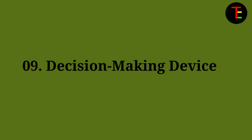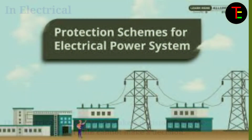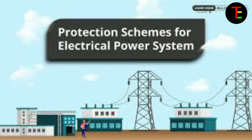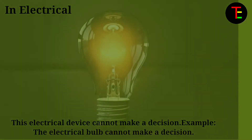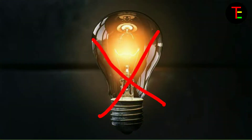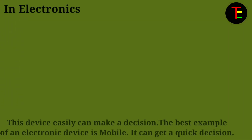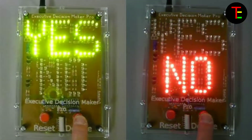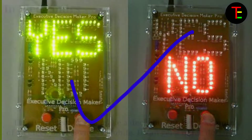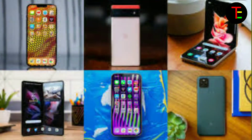No.9 Decision-making device: The electrical device cannot make a decision. For example, an electrical valve cannot make a decision. But an electronic circuit — this device can easily make a decision. The best example of an electronic device is a mobile phone. It can get a quick decision.